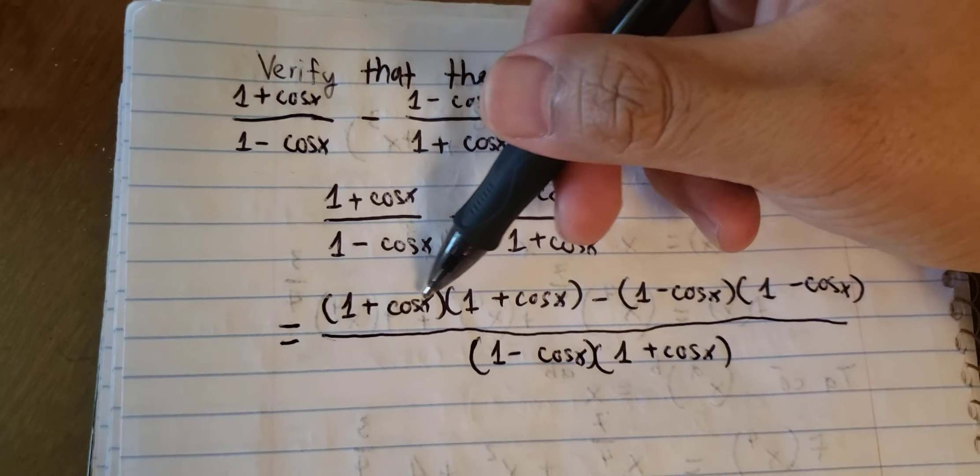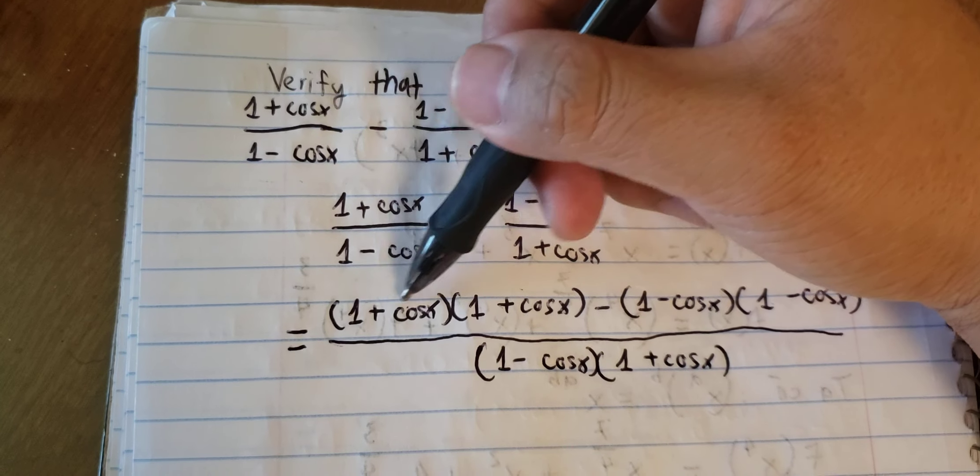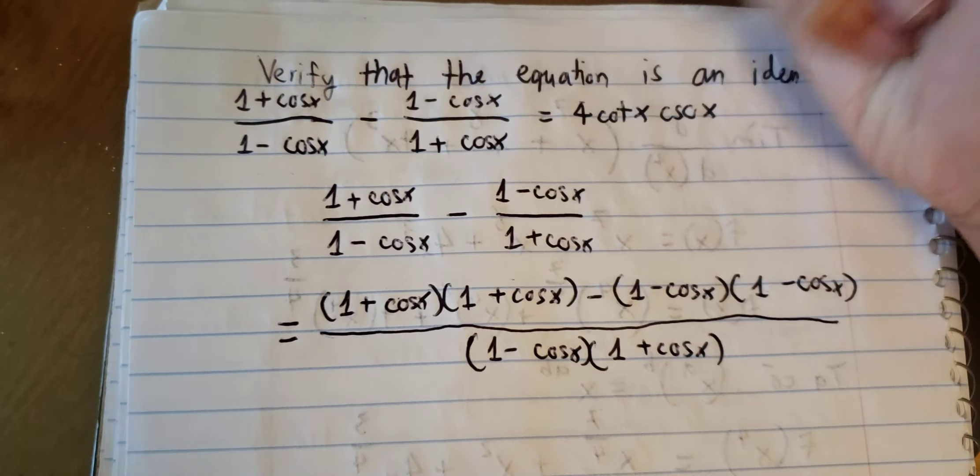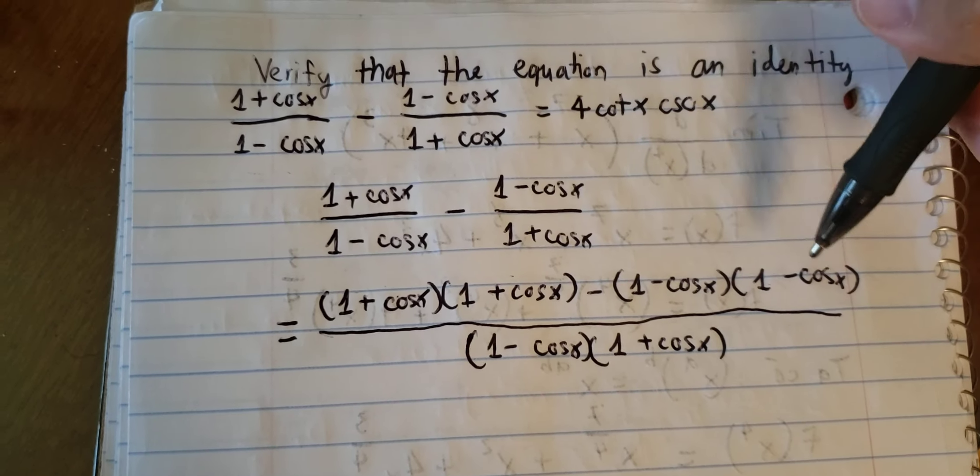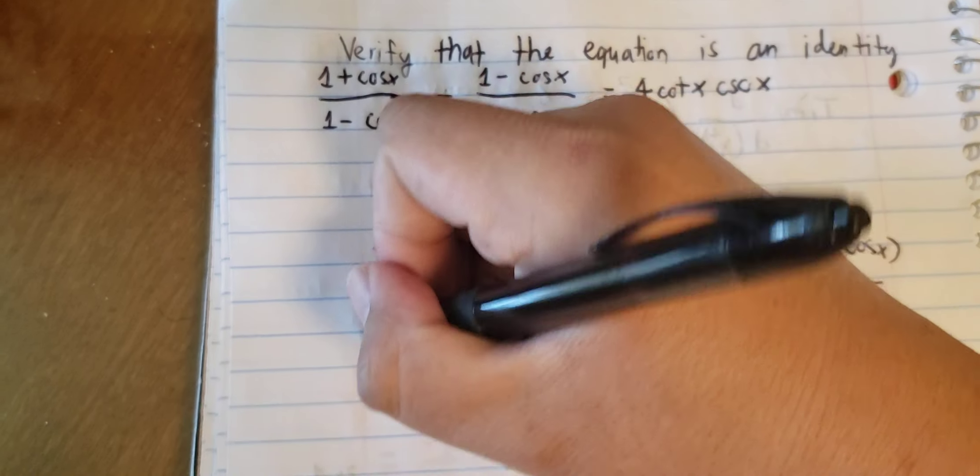Next, this one is 1 plus cos x to the power of 2, similar for this one. So we have this.